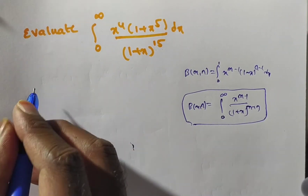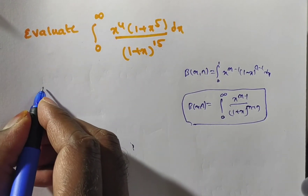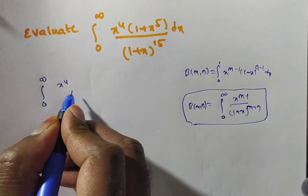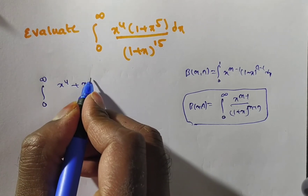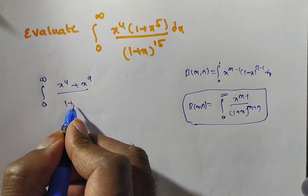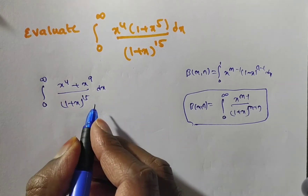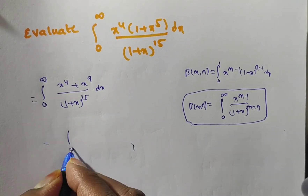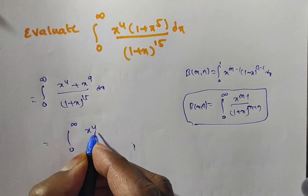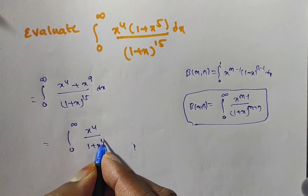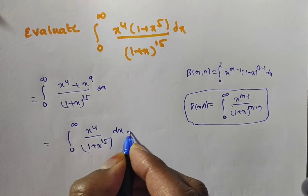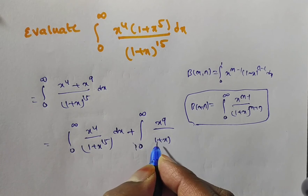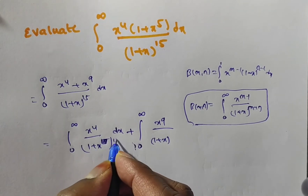Now we have to convert this problem into Standard Form 1. Split the given integral: multiply inside to get (x⁴ + x⁹) / (1+x)¹⁵. Separating the terms gives: integral from 0 to infinity of x⁴/(1+x)¹⁵ dx plus integral from 0 to infinity of x⁹/(1+x)¹⁵ dx.